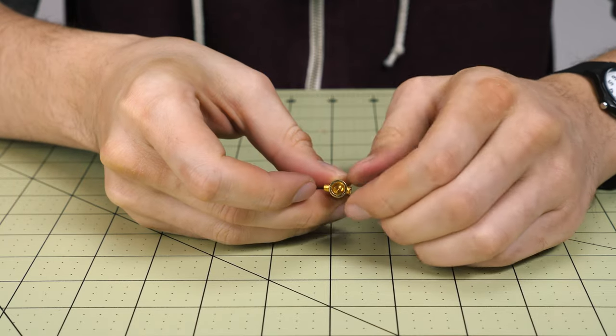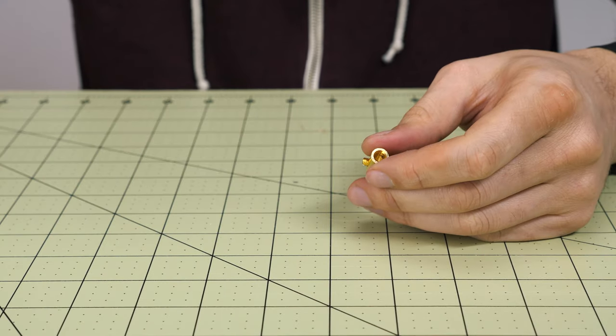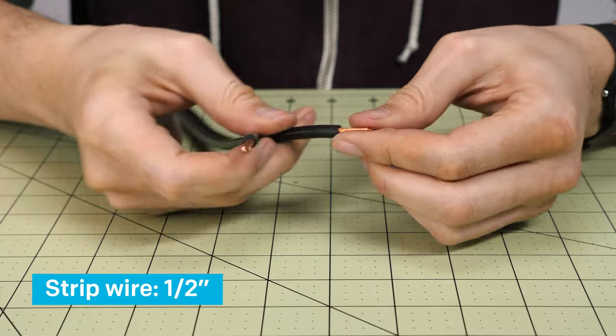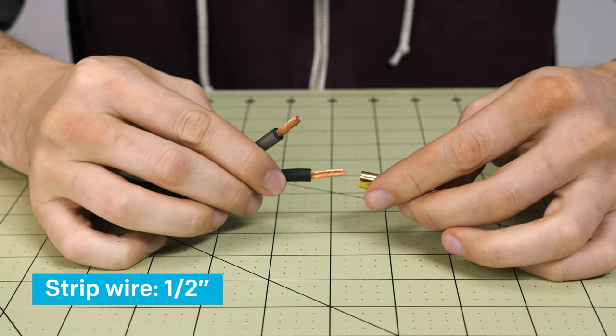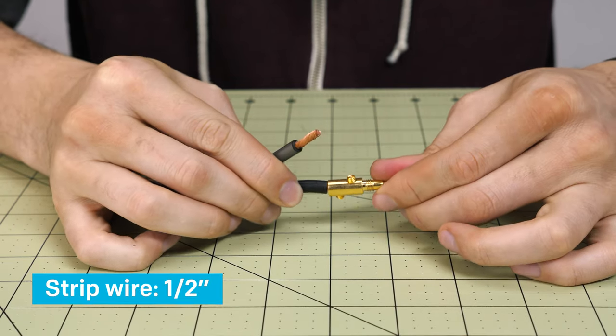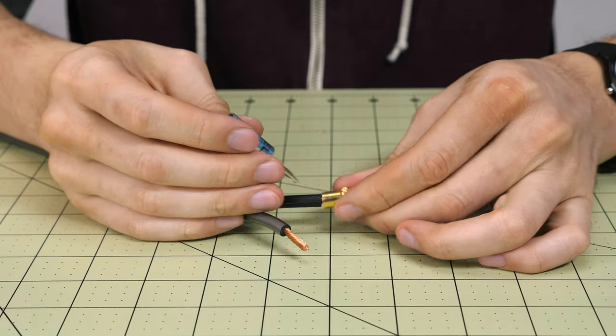Once you have the set screws open, you can see down the barrel of the plug. Grab your speaker wire and insert it into the body of the plug. Make sure it's flush with the end so that both set screws will make contact with the wire.